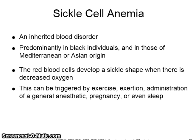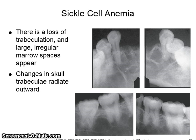Sickle cell anemia is an inherited blood disorder predominantly seen in Black, Mediterranean, or Asian individuals. The red blood cells develop a sickle shape when there is a decrease in oxygen, which can be triggered by exercise, exertion, administration of general anesthetic, pregnancy, or even during sleep. In sickle cell anemia, there is a loss of trabeculation and large irregular marrow spaces appear, and changes in skull trabeculae radiate outward.